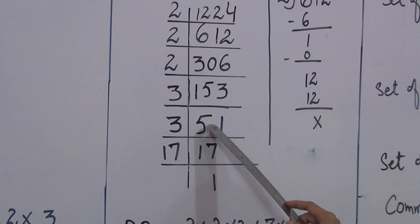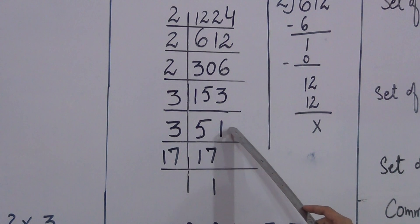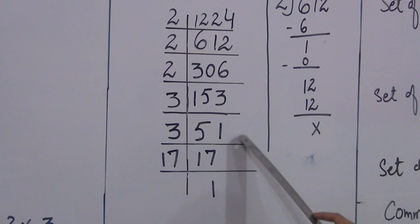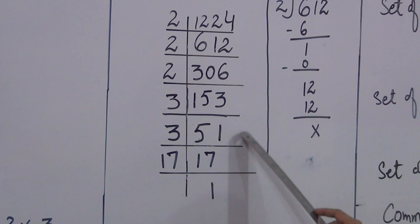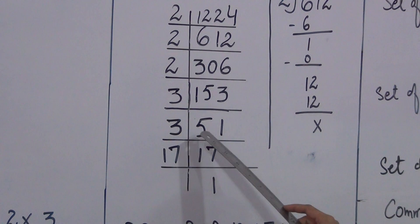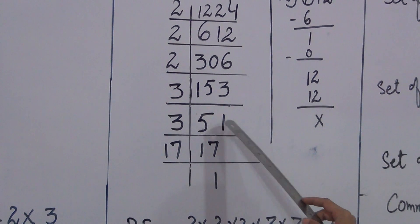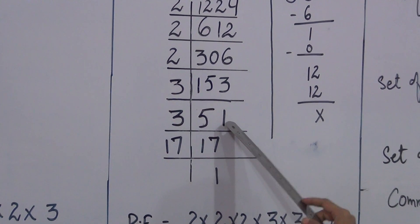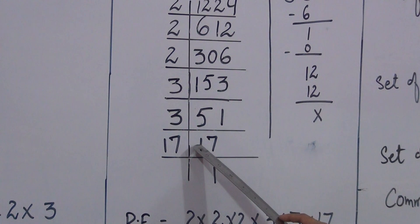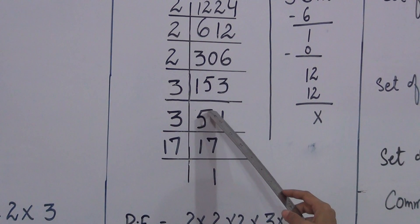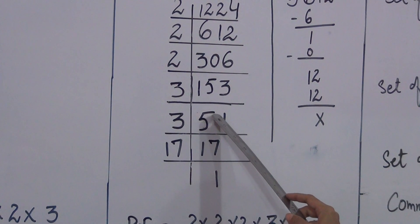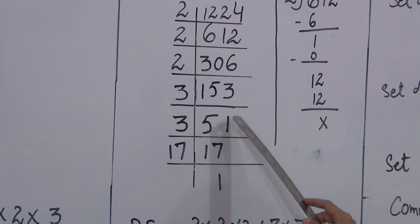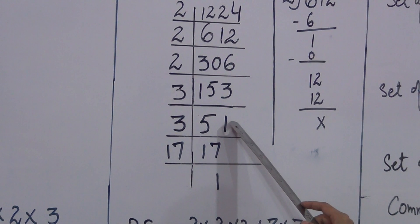We will check 51 by 3 again. Add the digits: 5 + 1 = 6. Since 6 is divisible by 3, 51 is also divisible by 3. 51 ÷ 3 = 17. 3 times 7 is 21, so we get 17.